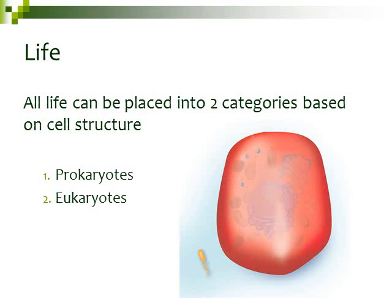Life can be placed into two different categories based on what type of cell that organism has. The first type is called the prokaryotic cell, and it's very tiny — it's the tiny little orange structure in the bottom left of the image on the slide. The big red structure is a eukaryotic cell, and if you look inside it, you'll see purple, yellow, and blue parts — those are the different organelles found in eukaryotic cells.